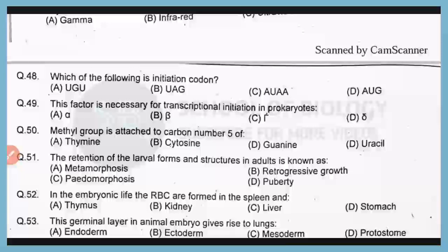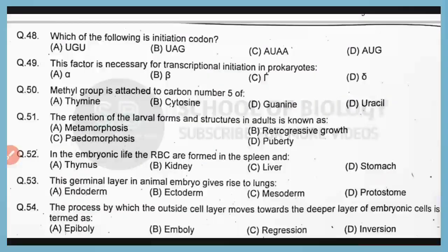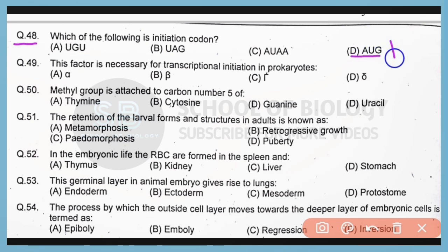Question number 48. Which of the following is an initiation codon? So correct answer is option D. AUG is an initiation codon that codes for the amino acid methionine.